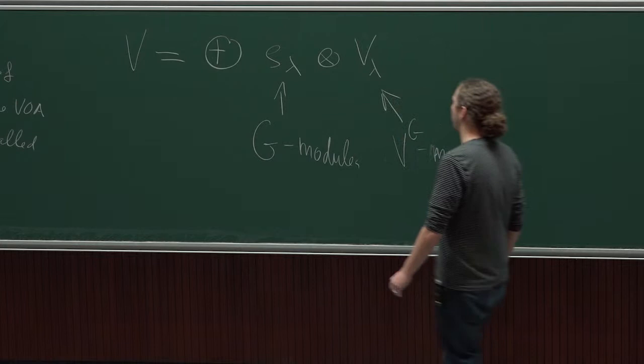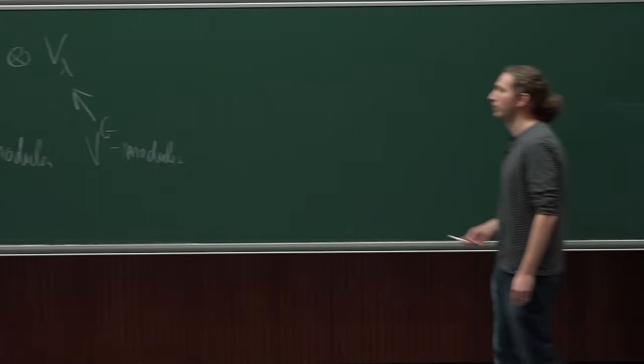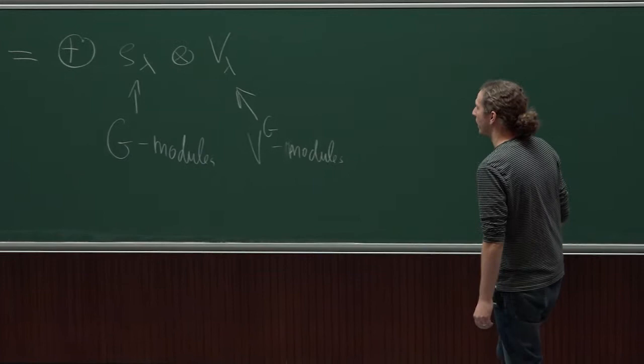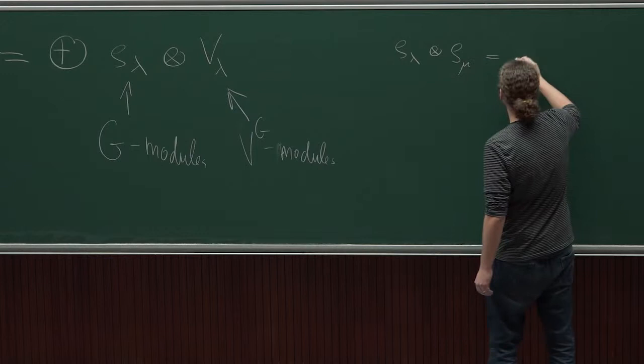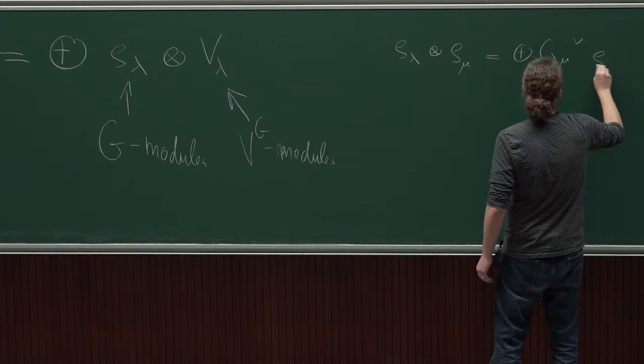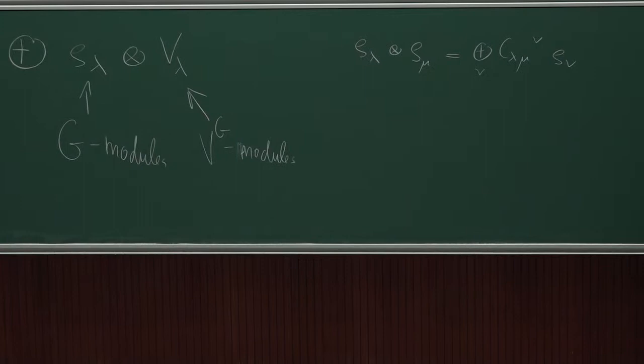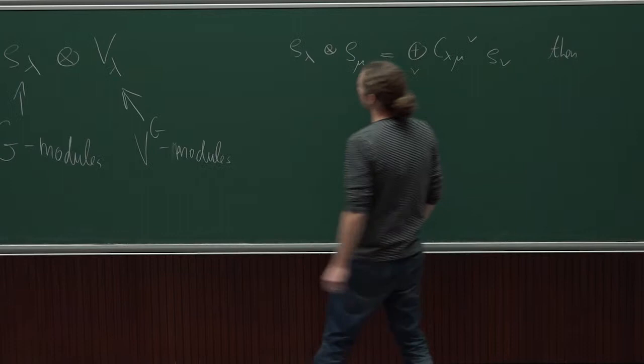There's one thing one can say: under all the assumptions that I don't want to mention — under the assumption that V, the orbifold theory, is physically reasonable — one has the following: if the tensor product of G modules is given by certain structure constants, then the tensor product of V modules is of the same type.